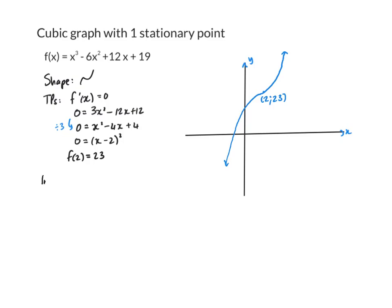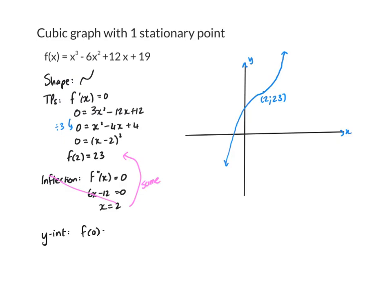Now if you wanted to, you could work out the inflection point — set your second derivative equal to zero. Using my first derivative to work out the second derivative, you get x is 2, which is the same as the turning point. That makes sense because there isn't a middle section of the curve. So you don't need to work out the inflection point separately unless you want it to guide you on the concavity of the graph.